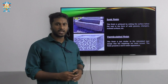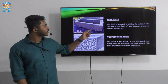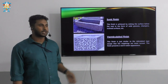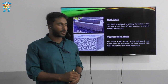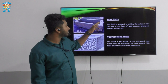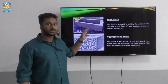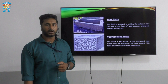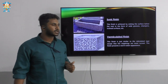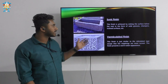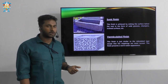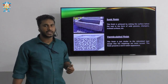Next we have the sunk finish. Looking at the figure, it looks similar to cement hollow blocks which have a hollow in the centre. In the same way, a margin of about 20 mm width is given and the inner part is sunk down in the form of wide grooves, chamfers, or inclined surfaces.